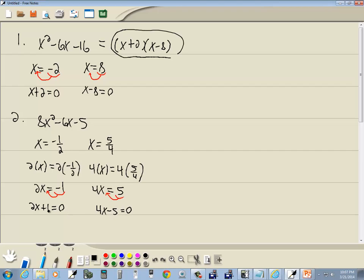Now, again, our goal is to get 0 on the right side and no fractions, which is what we have. So, this factors as 2x plus 1 times 4x minus 5.